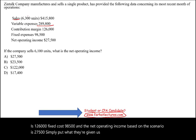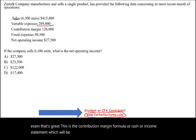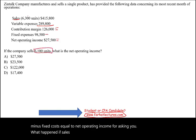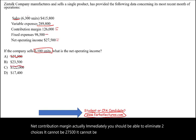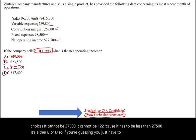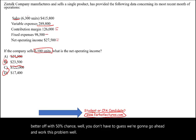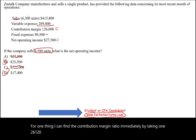They're asking: what happens if sales is 6,100 units — what will be the net operating income? Immediately you should be able to eliminate two choices. It cannot be $27,500 and it cannot be above that, because it has to be less. So if you're guessing, you already have a 50% chance with two remaining options. But you don't have to guess — we're going to work this problem. We can find the contribution margin ratio immediately by taking $126,000 divided by $415,800, which gives us approximately 0.3030.